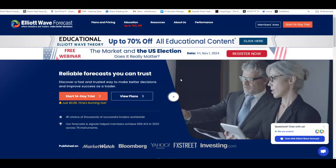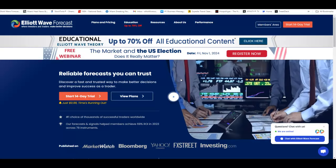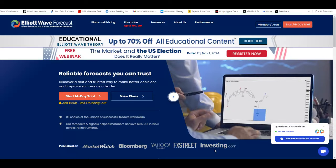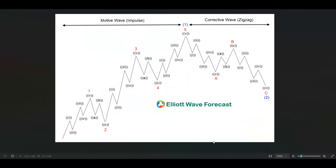We're gonna take a look today at General Electric, but before we jump into the General Electric chart, I want to remind you guys how a five-wave advance looks in the Elliott Wave theory. We got waves one, two, three, four, five in black that makes one red. Two red, then after three back, another five in black makes three red, three corrections in black makes a four, and then a five. After five, we're gonna see a pullback to correct this whole cycle.